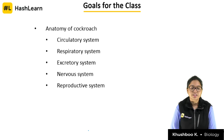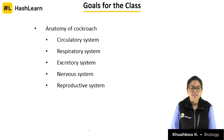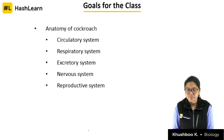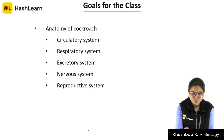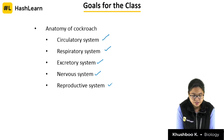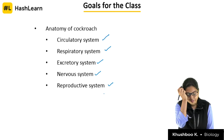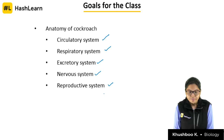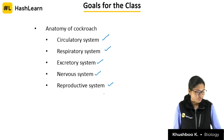Now on your screen are the goals for today's class. Under anatomy we have: circulatory system, respiratory system, excretory system, nervous system, and reproductive system. Digestive system was done in the last class. So fasten your seat belt — we are going to dissect the cockroach and cover these five systems.